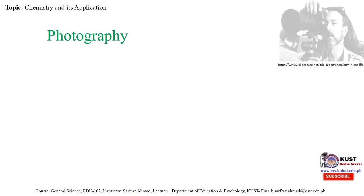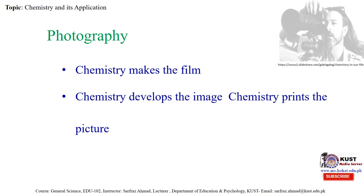Then comes photography. How do we see or look at pictures? How are pictures being made? How are things converted into pictures? Chemistry makes the film. Chemistry develops the image. Chemistry prints the picture. It is very fascinating that you capture a scene, and that scene becomes a picture. Things are reflected in front of us, and with the help of a camera, we convert that scene into pictures — and this is due to chemistry.